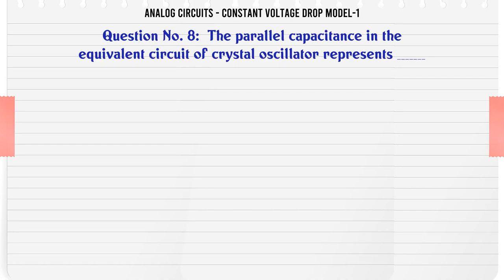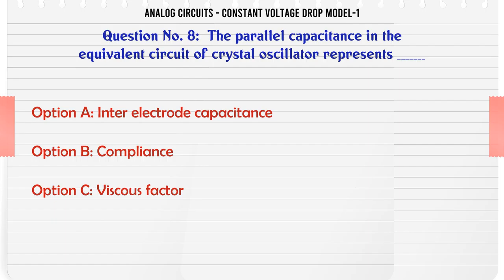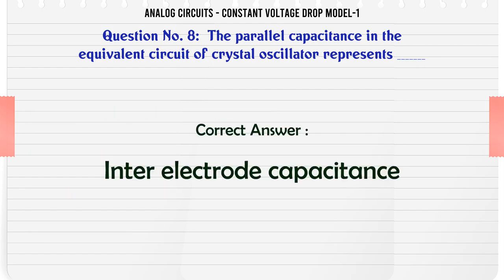The parallel capacitance in the equivalent circuit of crystal oscillator represents — A) Inter-electrode capacitance, B) Compliance, C) Viscous factor, D) Mass. The correct answer is Inter-electrode capacitance.